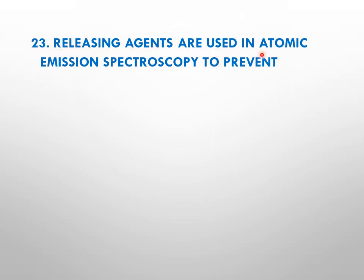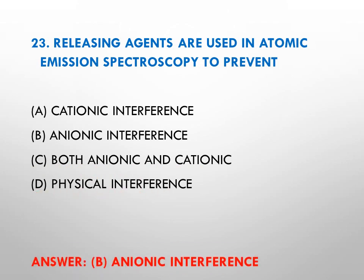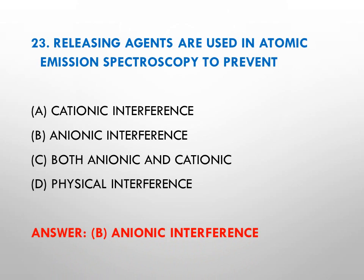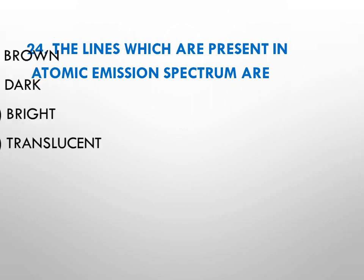Question number twenty-three: releasing agents are used in atomic emission spectroscopy to prevent — options: A cationic interference, B anionic interferences, C both anionic and cationic interferences, D physical interferences. The right answer is B, that is anionic interferences.